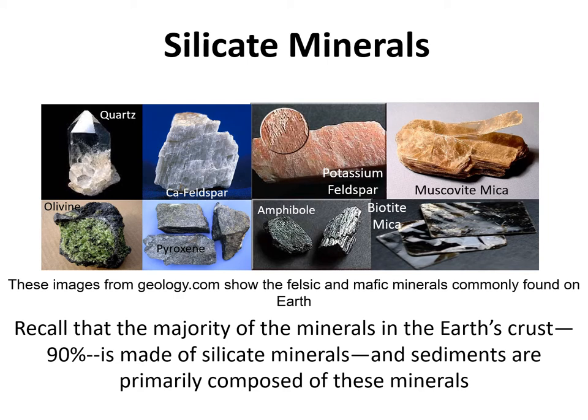We've got our light silicates: quartz, the feldspars — calcium feldspar and potassium feldspar (also called orthoclase) — and muscovite mica. Then we have our dark silicates: biotite mica, amphibole, pyroxene, and olivine. These light and dark silicates combine together to make various types of rocks on our surface, including the sedimentary rocks we're going to be discussing in this lecture.